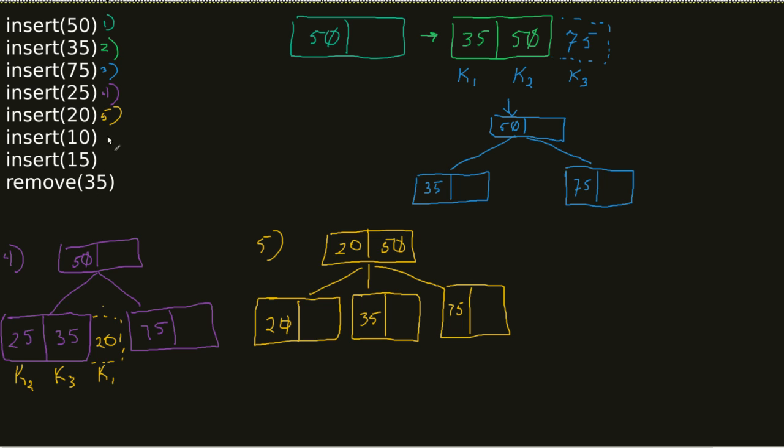So just like before, we happen to have a spot available, so it becomes, in this case, 20, 50. These are left relatively untouched. So 75 is untouched, 75 is brought back in, 35 is untouched, and 20 gets a new partner in crime, 10. Sorry, not 20, 25. 25 gets a new partner in crime.